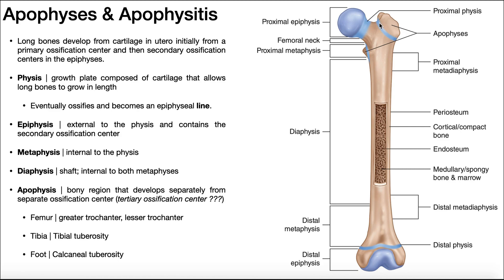Once the growth plates fuse and ossify near or after adolescence, these bones have effectively fused with the rest of the femur. These apophyses are important bony landmarks — the larger one is the greater trochanter, which provides insertions for many muscles including the gluteus medius, gluteus minimus, and several external rotators of the hip. The smaller one is the lesser trochanter, which is the insertion of the iliopsoas muscle — both psoas major and iliacus. It's also worth noting that the tibia has one called the tibial tuberosity, and the foot has one on the calcaneus called the calcaneal tuberosity.